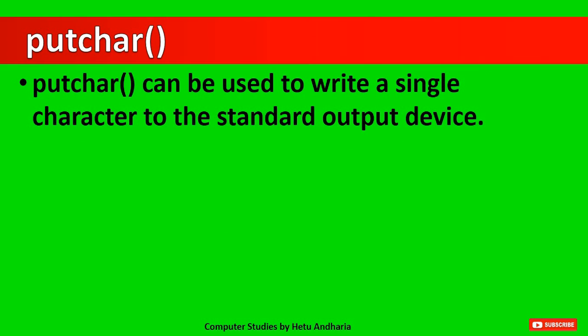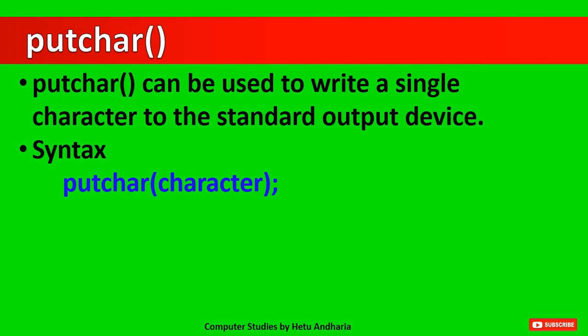The first one is putchar. The function putchar can be used to write a single character to the standard output device. The general syntax is putchar with the variable name in brackets. The character must be of char data type — you cannot display a value of integer or float data type using this function. You can display only a char variable or a valid C language character using putchar.